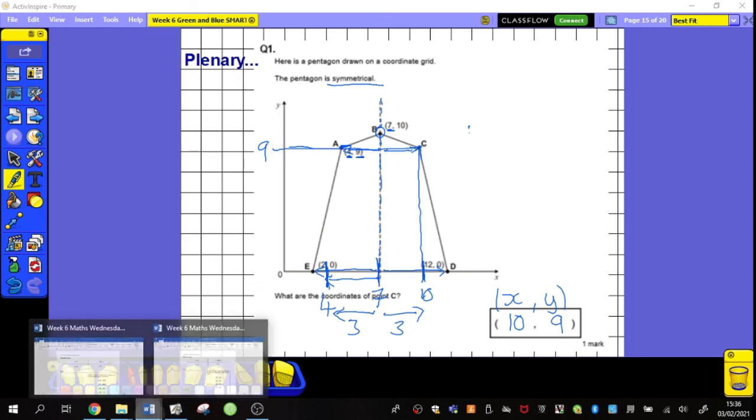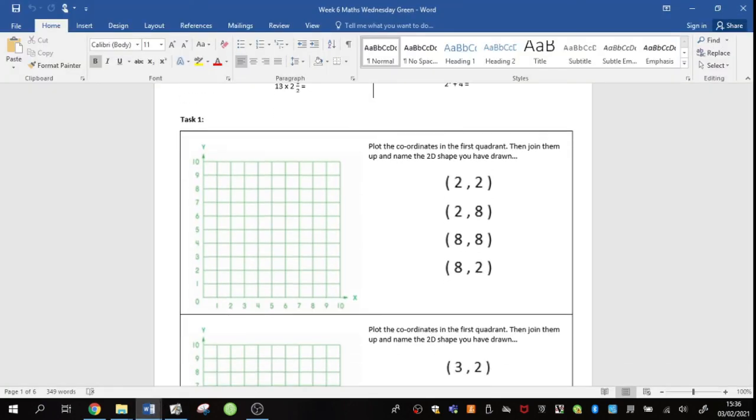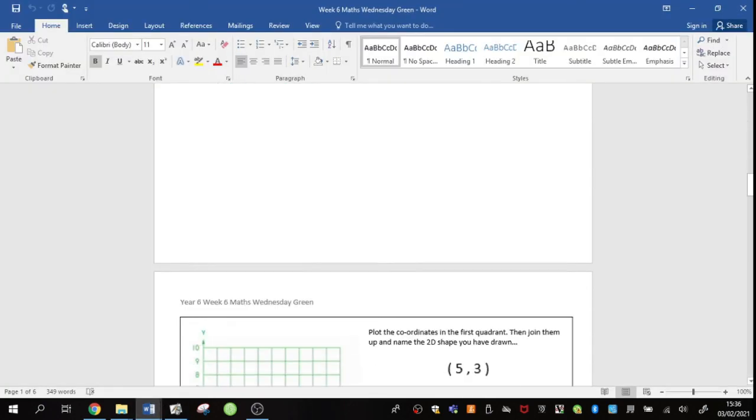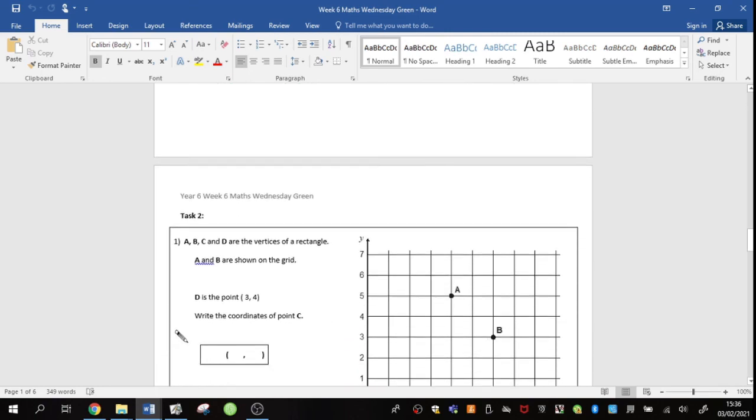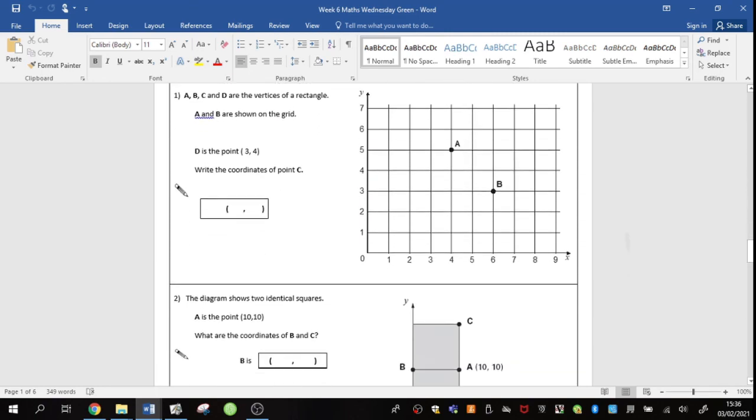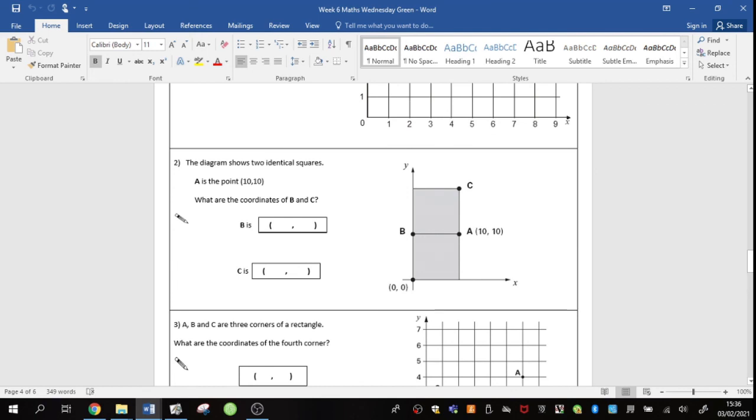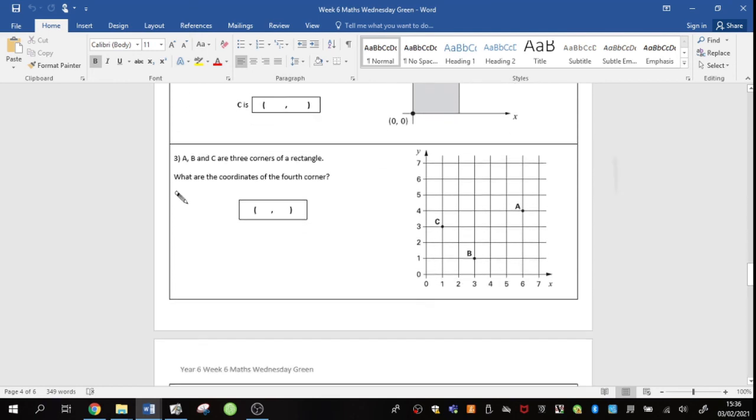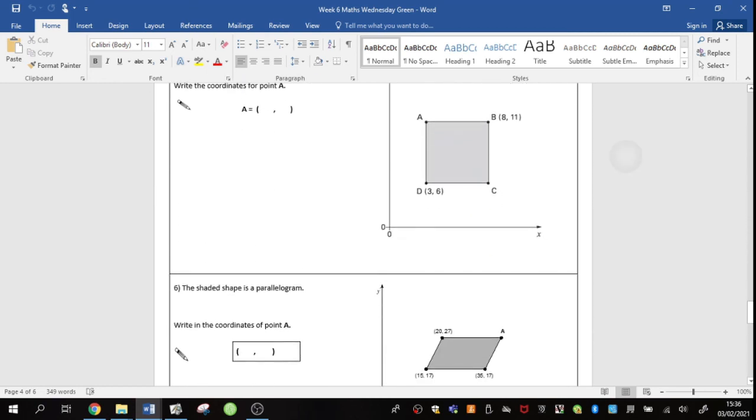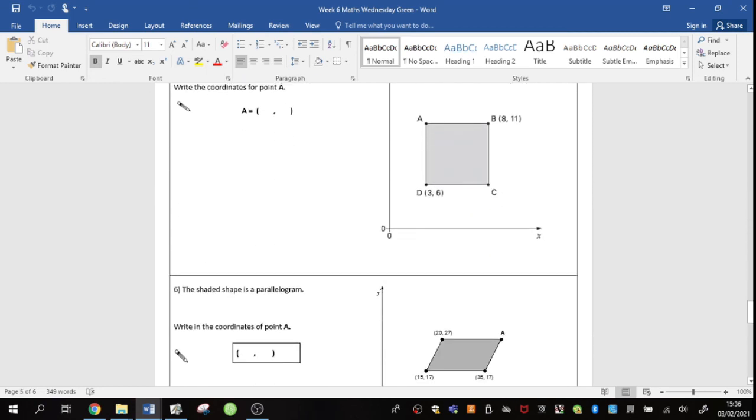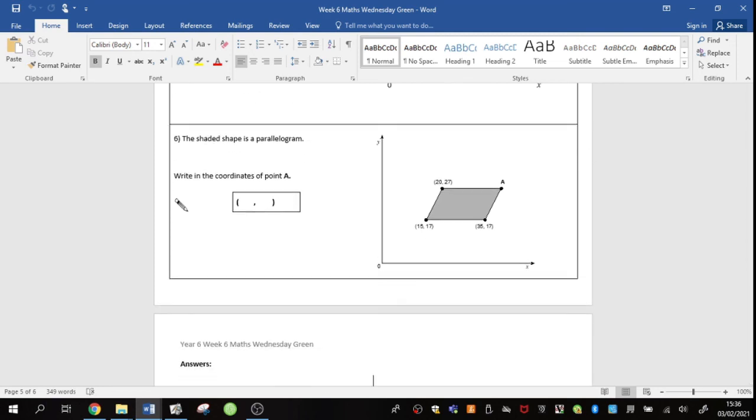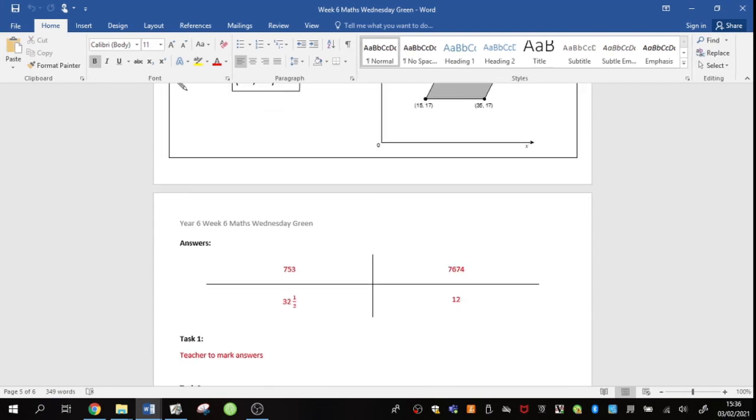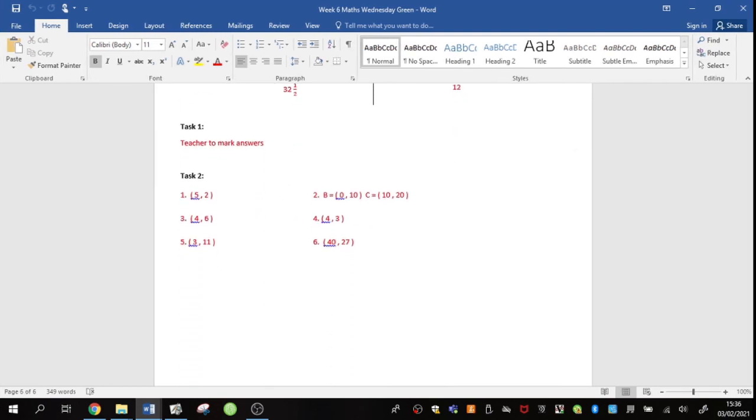Your job now is to have a look at task 2. There we go. You've got a mixture of problems using this same principle of there's no grid on some of them, not all of them. So, a missing grid, missing coordinates, seeing if you can use all of that knowledge to figure out what those missing coordinates are. You have a range. And, as per normal, all answers are underneath.